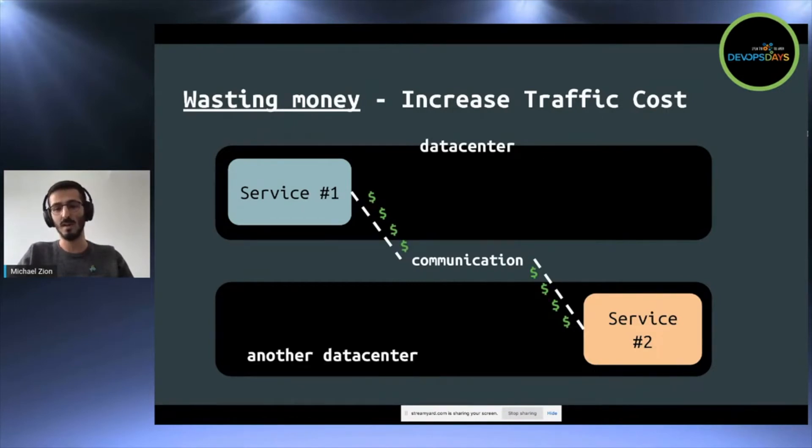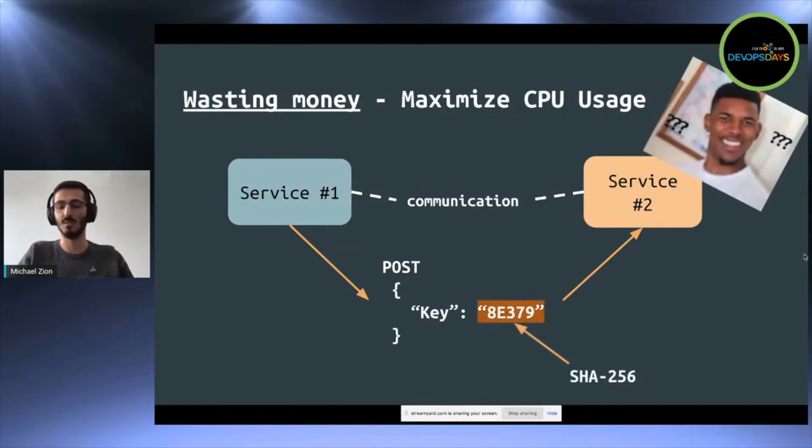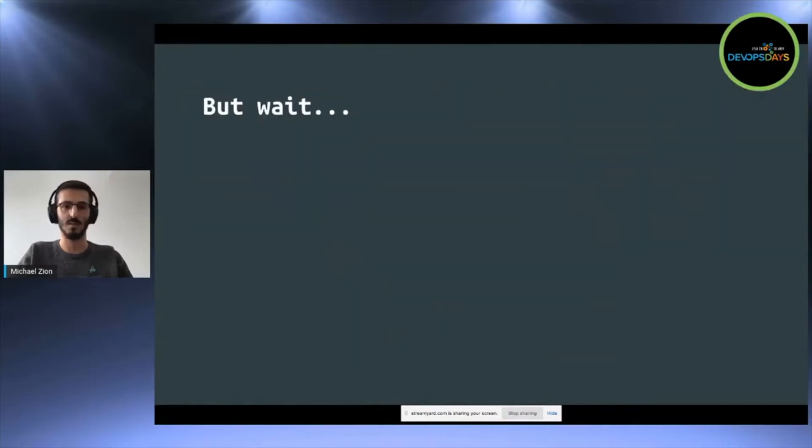Another way to maximize cost is maximize CPU usage. And when I say CPU usage, I mean, let's say service one is talking to service two via HTTP, the same as the previous example. And he sends a post request with a key. The key has a value. What we can do is we can hash the value. And since hash is not a reversible function, it would be very hard for service two to get the real value from the hash. So it really makes the CPU work harder. And it's another very efficient way to maximize cost.